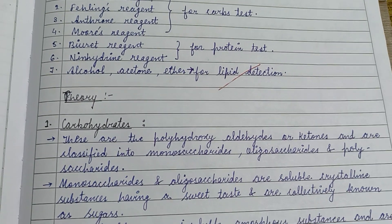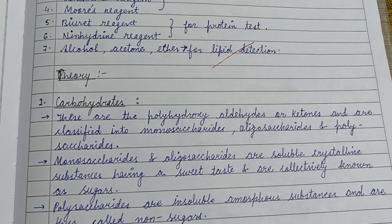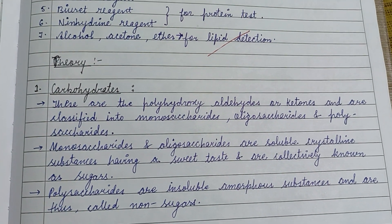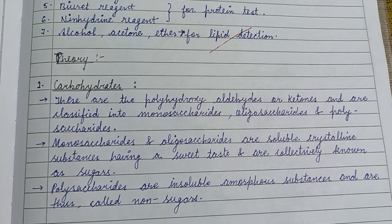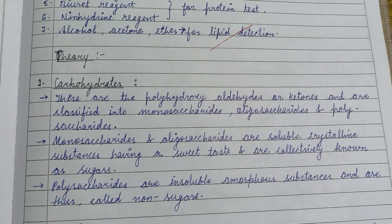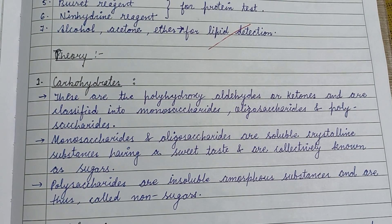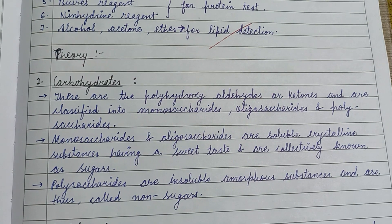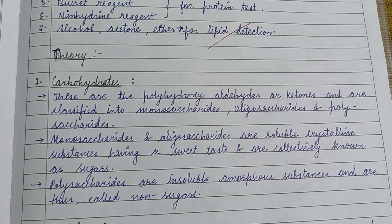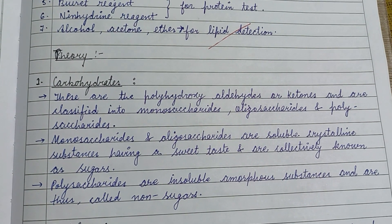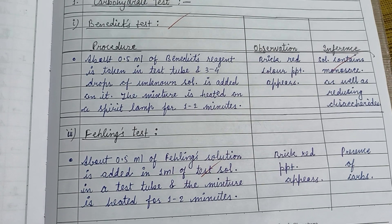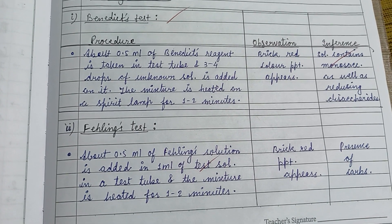First, we'll discuss the carbohydrate test. Carbohydrates are polyhydroxy aldehydes or ketones and are classified into monosaccharides, oligosaccharides, and polysaccharides. Monosaccharides and oligosaccharides are soluble, crystalline substances having a sweet taste, and are collectively known as sugars.